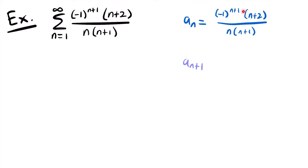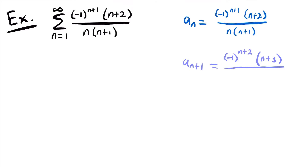For a sub n plus 1, we replace each n with n plus 1. The power n plus 1 becomes n plus 2. The quantity n plus 2 becomes n plus 3. In the denominator, n becomes n plus 1 and n plus 1 becomes n plus 2. So a sub n plus 1 is negative 1 to the power of n plus 2, times n plus 3, divided by n plus 1 times n plus 2.